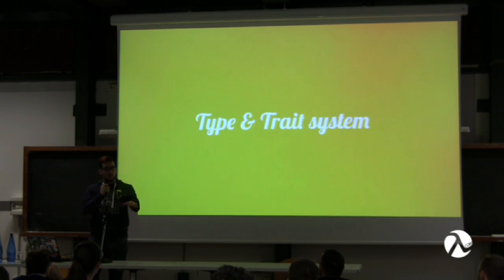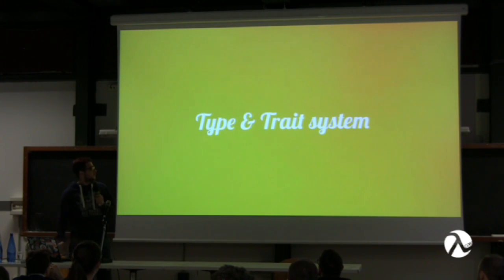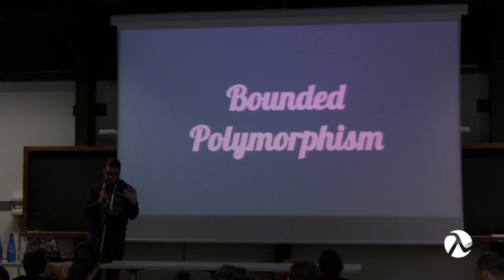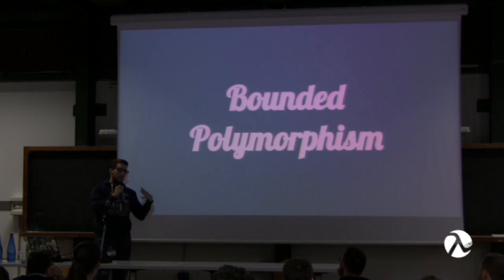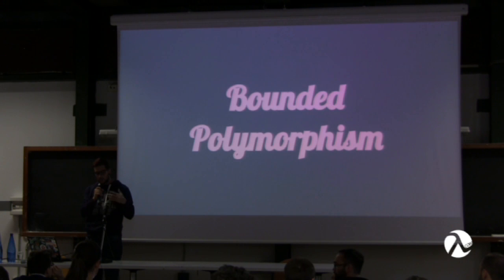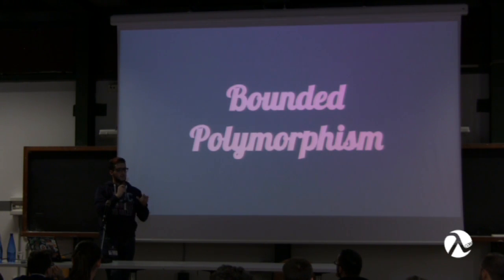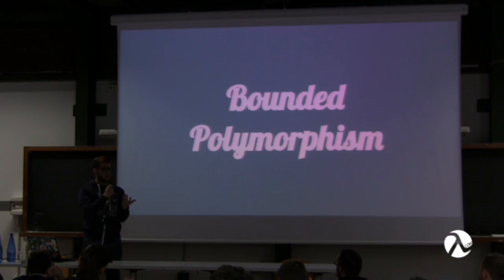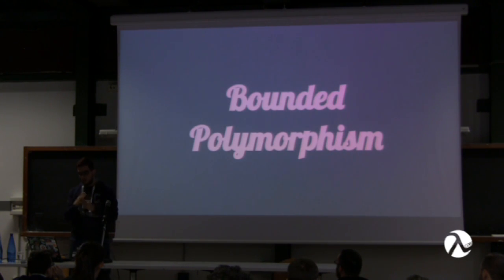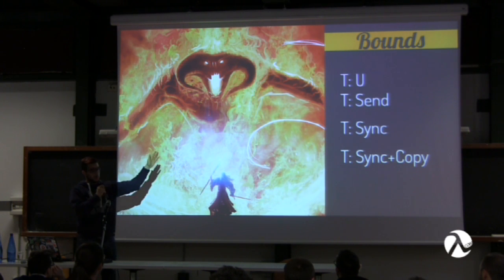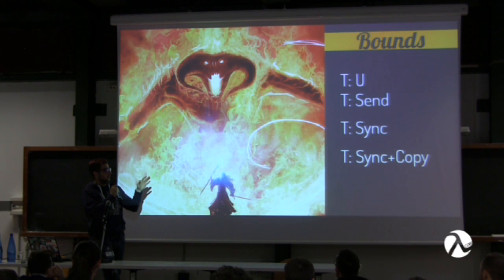The type system is parametrically polymorphic and also has bounded polymorphism, meaning you can have parametric types but also add bounds — telling the compiler that the types you're passing must have specific implementations, like implementing certain traits. Since we have an algebraic type system, we can sum up types to build more complex bounds. For example, T after the colon has all the traits that must be implemented for the bound to hold, and where U is some other type.